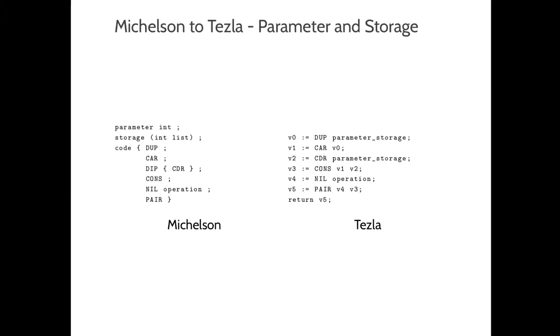The initial stack of every Michelson smart contract contains a single value which is a pair composed of the parameter and the storage of the contract. As such, we introduce a special variable called parameter storage that represents this pair. Also, every Michelson smart contract must have a final stack containing a single element which is a pair of a list of internal operations emitted by the contract and a new storage. We make use of a return function to explicitly declare which variable contains such pair.